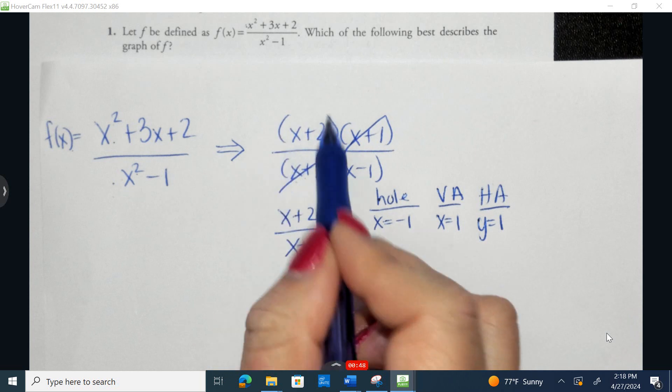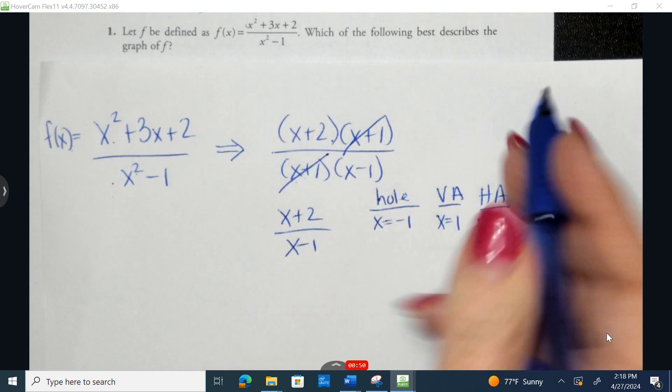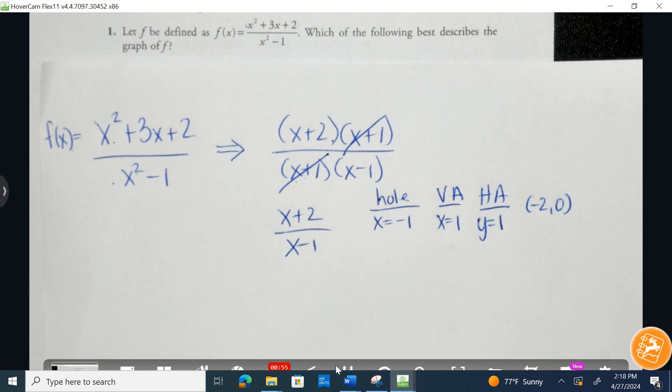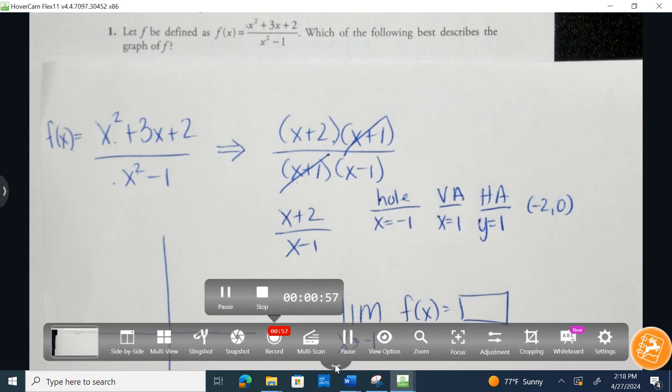And if we take the numerator after we've simplified and set it equal to 0 and solve, we end up with an x-intercept at negative 2, 0. So let's graph what we know. All right,